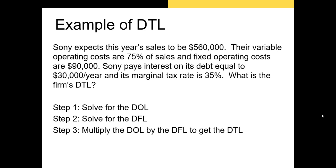Let's take a look at an example. Sony expects this year's sales to be $560,000. Their variable operating costs are 75% of sales and fixed operating costs are $90,000. Sony pays interest on its debt equal to $30,000 a year, and its marginal tax rate is 35%. What is the firm's degree of total leverage? The easiest way to solve this is to break it into three steps: first solve for the DOL, then the DFL, and then multiply DOL by DFL to get our DTL. I'm going to flip over to Excel and work this problem.